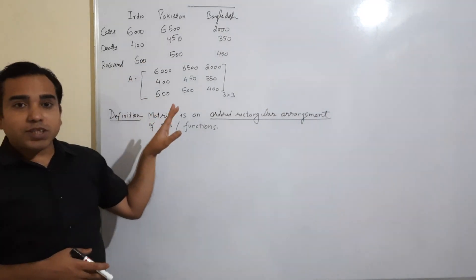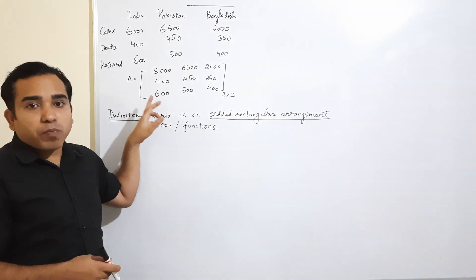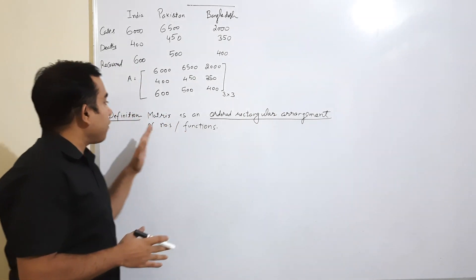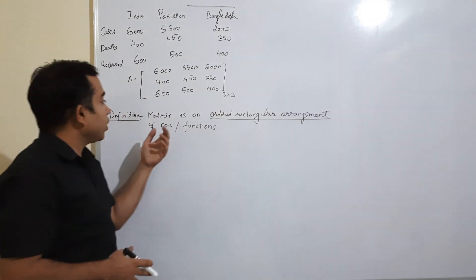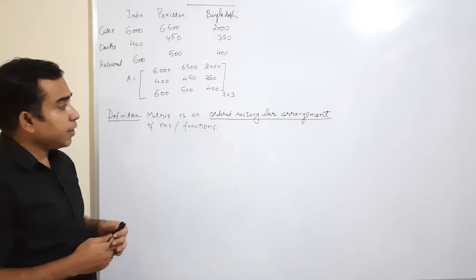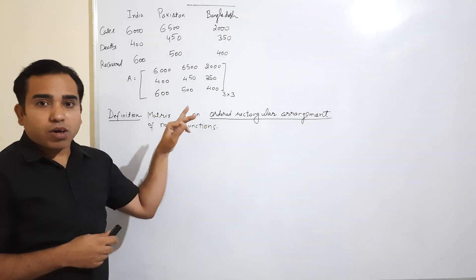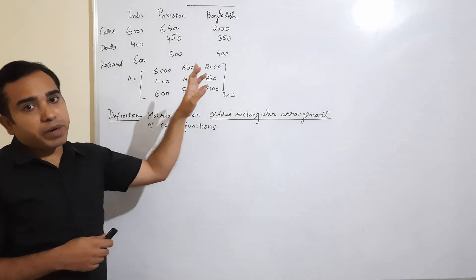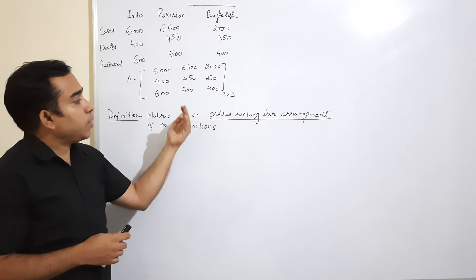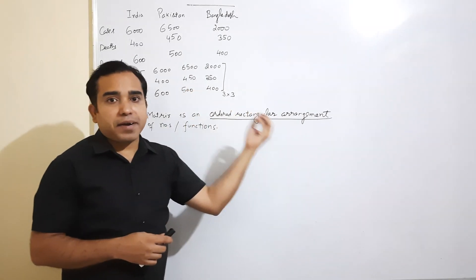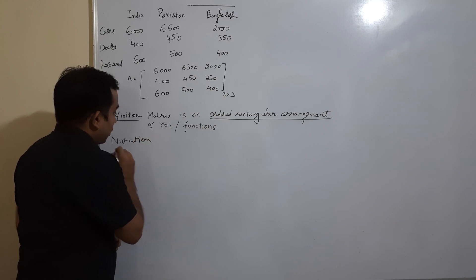In a table, the most important things are the numbers. So if we take only the numbers and use brackets, this way of writing numbers is called a matrix. The proper definition of a matrix is: a matrix is an ordered rectangular arrangement of numbers or functions. 'Ordered' means the position of each number matters — if you change the position, it becomes a different matrix. 'Rectangular' because it is derived from tables, which are generally rectangular in shape.